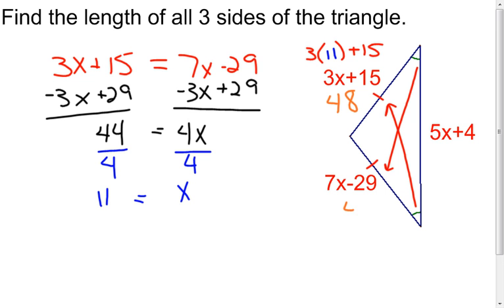Which means this one's also going to have to be 48. And you can plug the 11 in there, 7 times 11, it's going to put you at 77. And 77 minus 29, right back to 48. The only other one that I have to do is the base of my isosceles triangle.